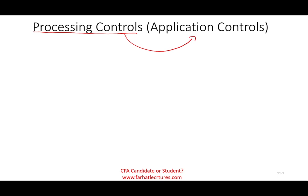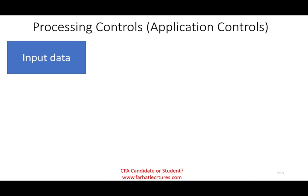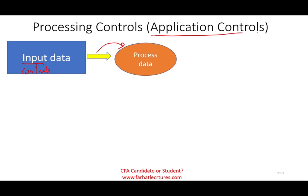Hello and welcome to the session in which we will discuss processing controls. Processing controls are part of the application controls — here we are talking about accounting information system application controls, or generally speaking, information system or software application controls. Before you process any transaction in an accounting information system, you have to input the data, feed it into the system, and then the system will process the data. In the prior session we looked at input controls — how do we avoid bad data from getting into the system in the first place. In this session we're going to be discussing processing controls, and both input controls and processing controls are part of the application control.